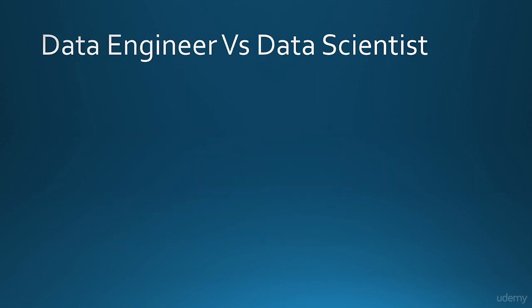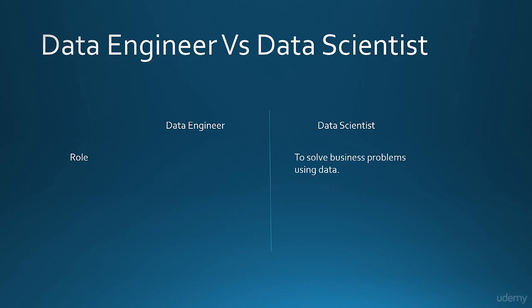That brings us to the next interesting comparison of the roles of data scientists and data engineers. This is a common thing which many people get confused with. In the ideal world, data scientists are generally the people who understand the various statistical models and can find out ways how a problem can be solved using the data around. On the other hand, data engineers are the people who implement the ideas of the data scientists to create the technical architecture.